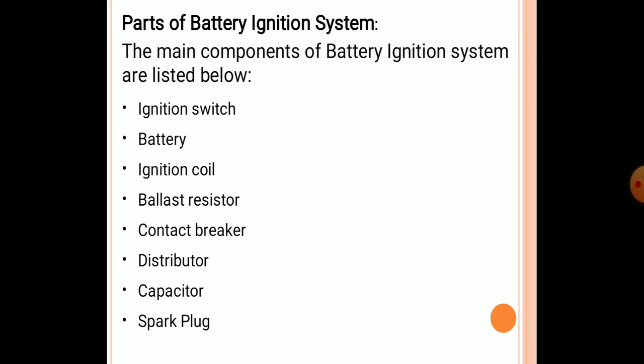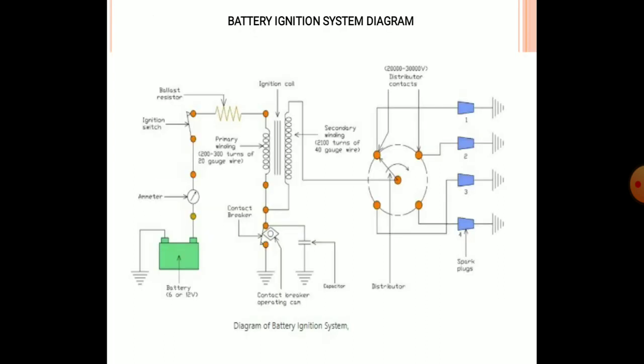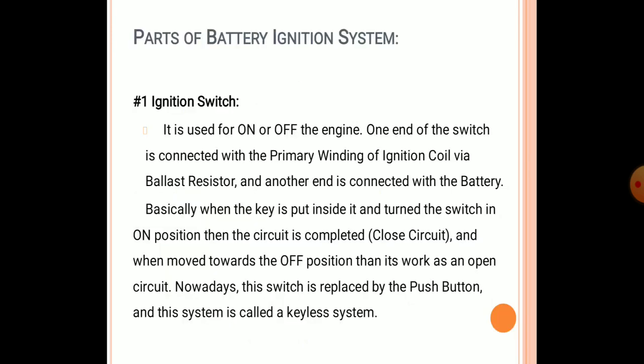The main components of battery ignition systems are: ignition switch, battery, ignition coil, resistors, contact breakers, distributors, capacitors, and spark plug. The system triggers a spark which ignites the fuel, the fuel burns, and the cycle of the IC engine runs in motion.